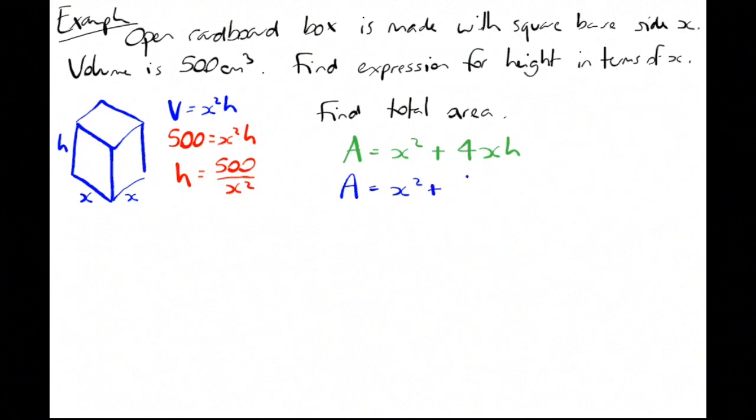But we've already expressed h in terms of x. So A = x² + 4x × 500/x², which is the same as A = x² + 2000/x.